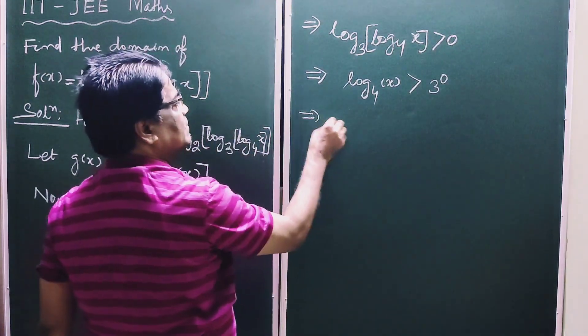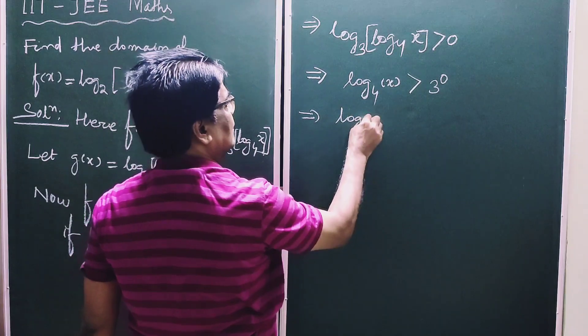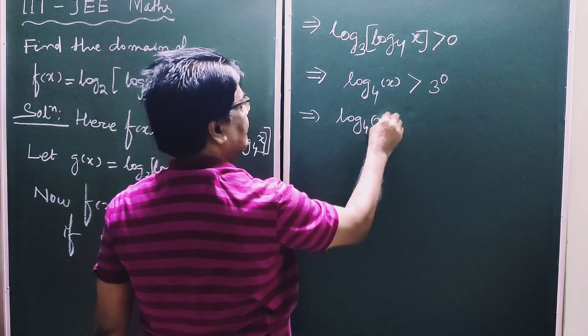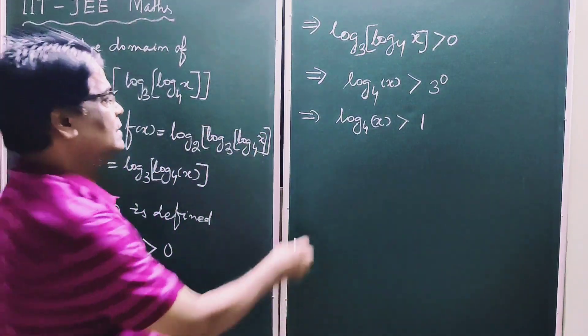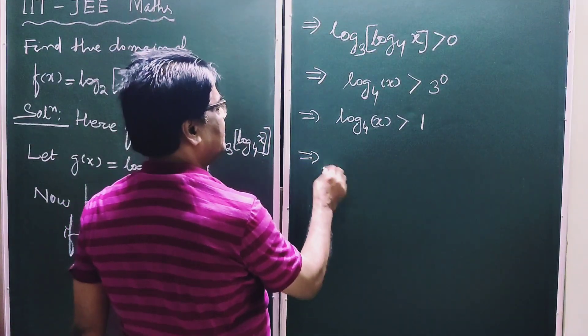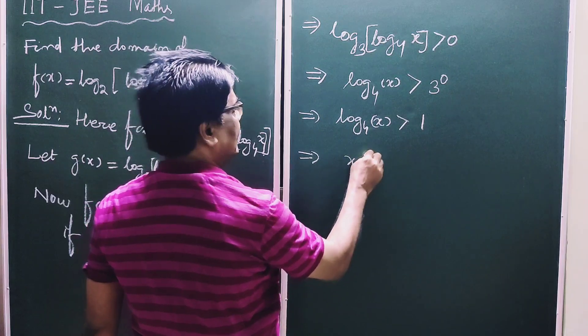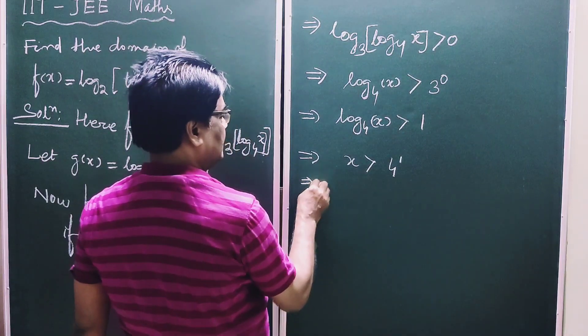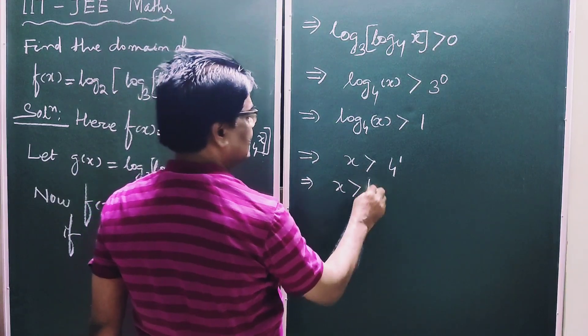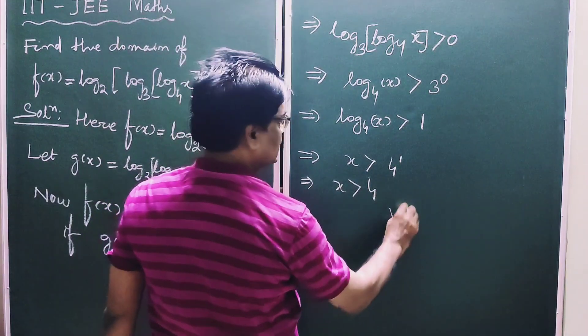This implies log₄(x) greater than 1, because 3 to the power 0 is 1. So this implies x greater than 4 to the power 1, which means x greater than 4. Answer.